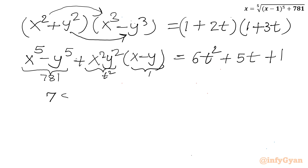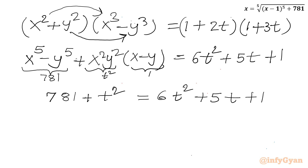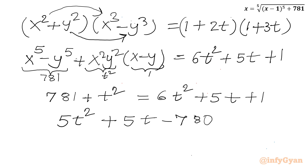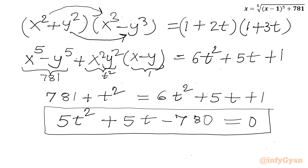The right-hand side product gives 6t squared plus 5t plus 1. Substituting x power 5 minus y power 5 equal to 781, we get 781 plus t squared equal to 6t squared plus 5t plus 1. Taking all terms to the right-hand side: 5t squared plus 5t minus 780 equal to 0. This quadratic is divisible by 5, so dividing gives t squared plus t minus 156 equal to 0.